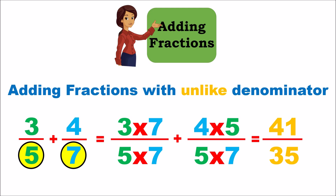7 times 3 is 21, and 4 times 5 is 20, so 21 plus 20 is 41 divided by 35. That's how you add fractions with different denominators.